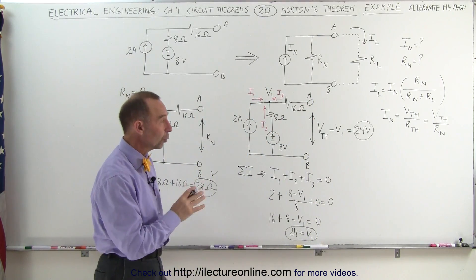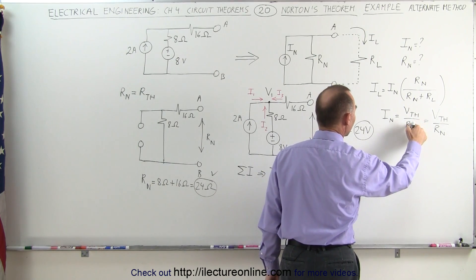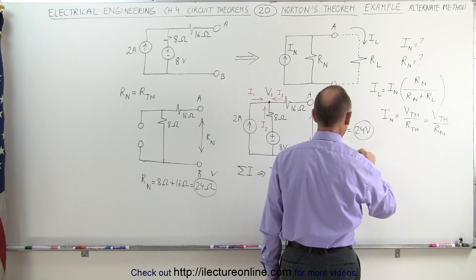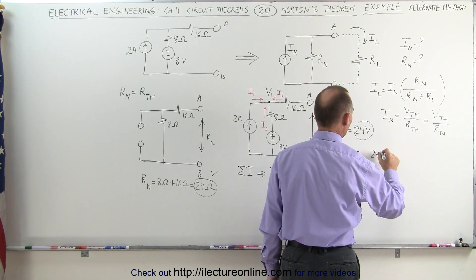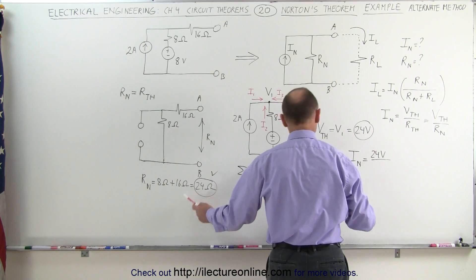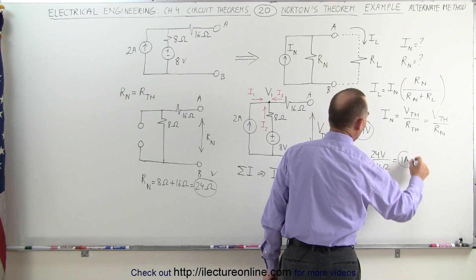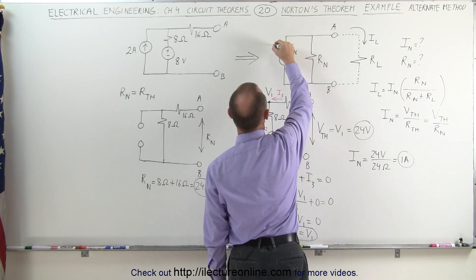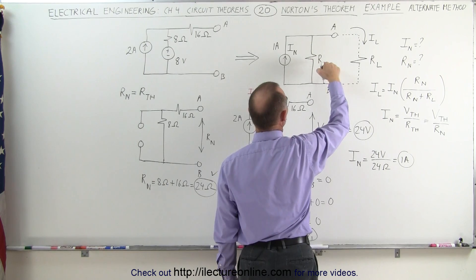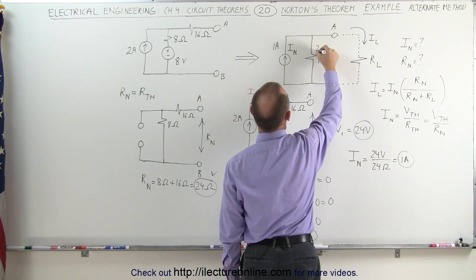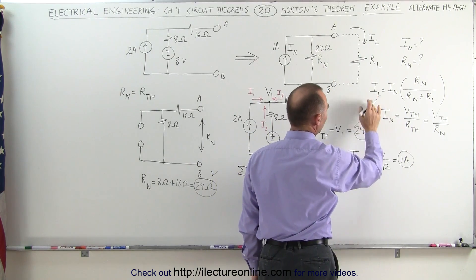At that point, we're ready to find the Norton current. The Norton current is the Thevenin voltage divided by the Thevenin resistance, or Norton resistance. So I sub n equals 24 volts divided by 24 ohms, which equals 1 amp. This means the equivalent circuit has a Norton current source of 1 amp, and the Norton resistance is equal to 24 ohms, which allows us to find the current through the load resistor.